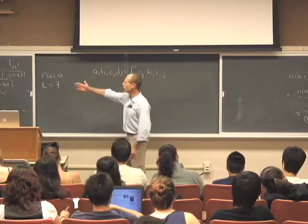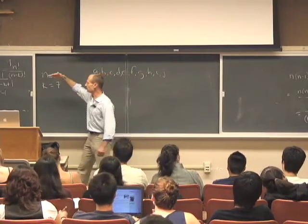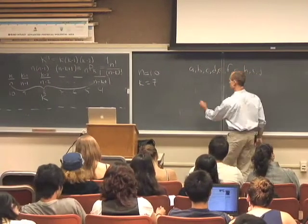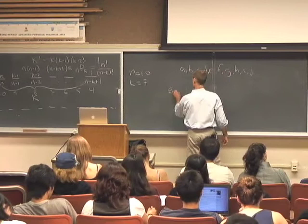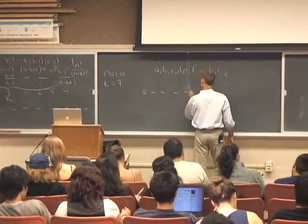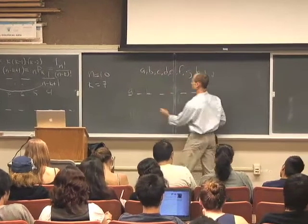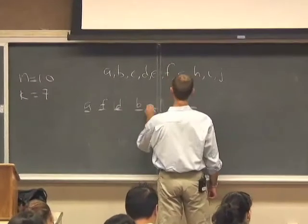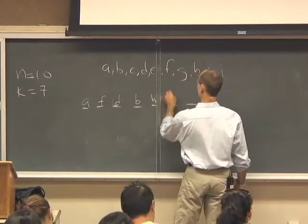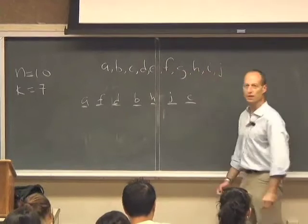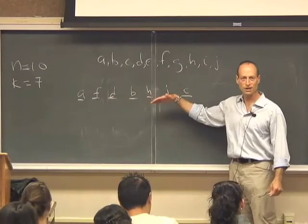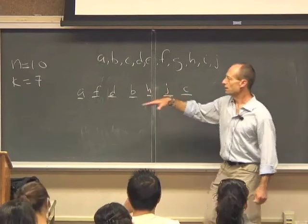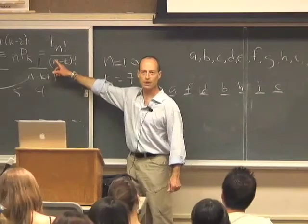So the way we just conceptualized this process was I'm going to pick one of these 10 things to be first. Let's say that it's A. And I'm going to pick one of these things to be second. Let's say it's F. And I'm going to pick one to be third. Let's say it's D. And then I'm going to pick B. And I'm going to pick H. And then I'm going to pick J. And so that's one particular ordering of seven of these 10 things. That leads kind of directly to this notion of nPk.